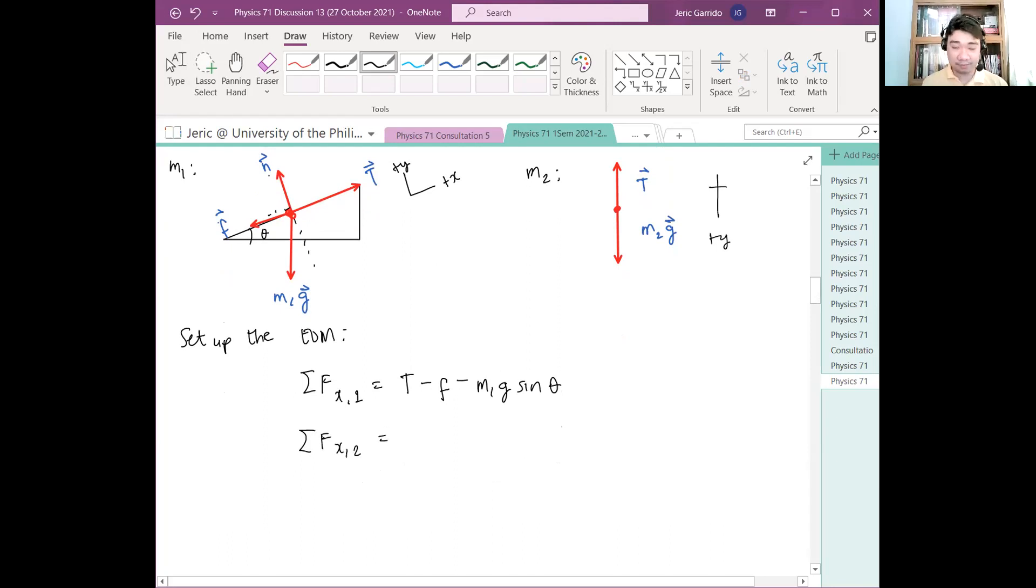And then, now, yung summation of forces acting on y for the first object, ano yan? Normal force, positive, positive y, n, tapos, di naman nag-act yung friction or tension in the y direction. Hence, wala yung contribution yan. However, the weight has a y component, which is minus m1g cosine theta.